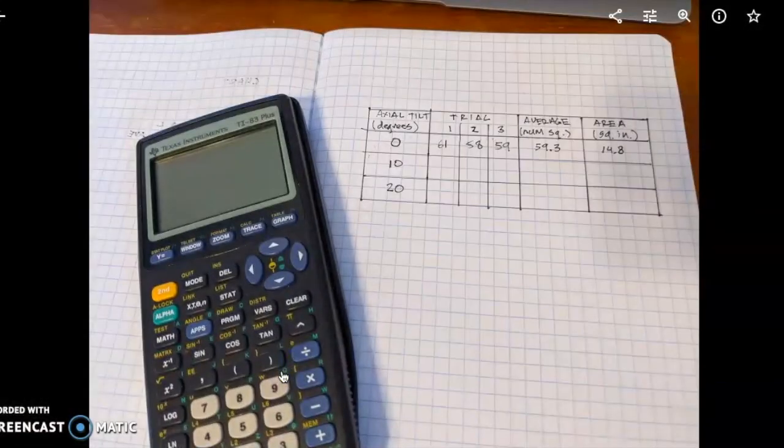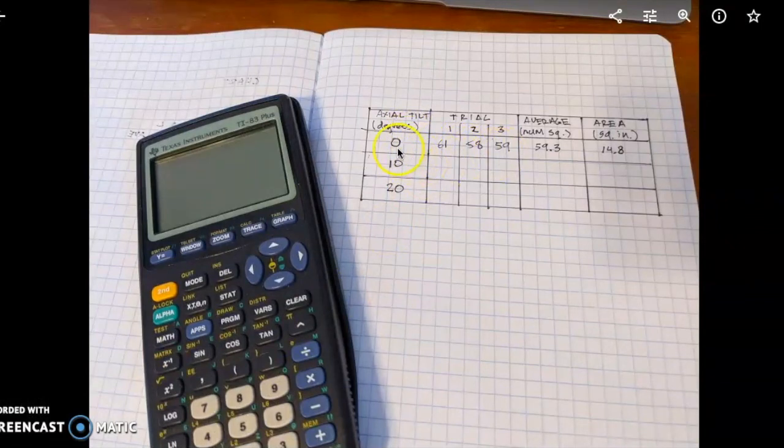So for example, I was able to get some trials. I did it three times with the same tilt of zero degrees, but these three I added them together, divided, I got 59.3333, but I rounded it to just 59.3. And then my area would be that number divided by four because there are four of these squares equals one square inch. So 14.8, and that's great. So that would be for zero degrees, and then I'm gonna do that three more times for 10 degrees and three more times for 20 degrees.